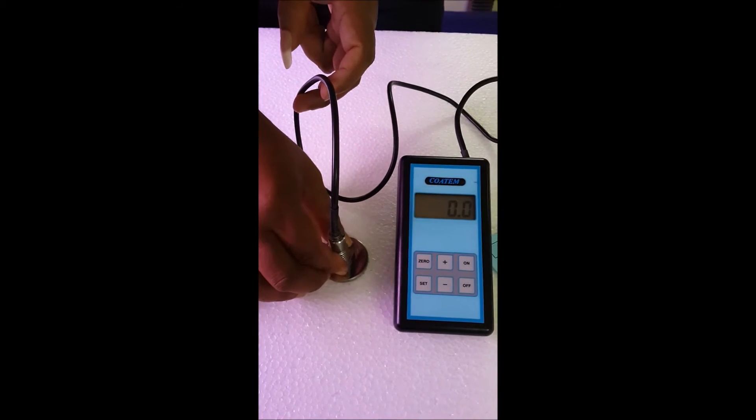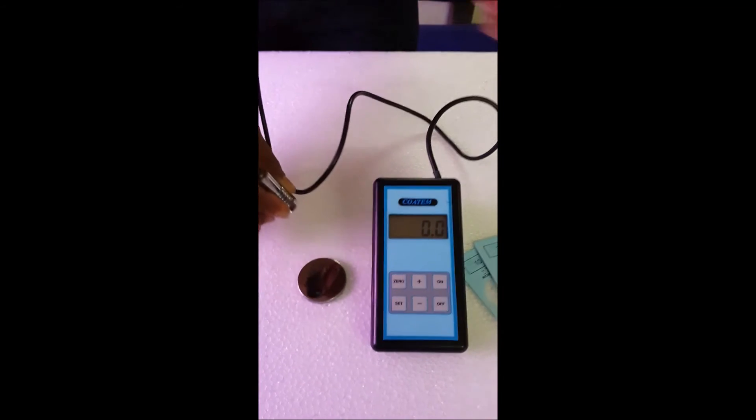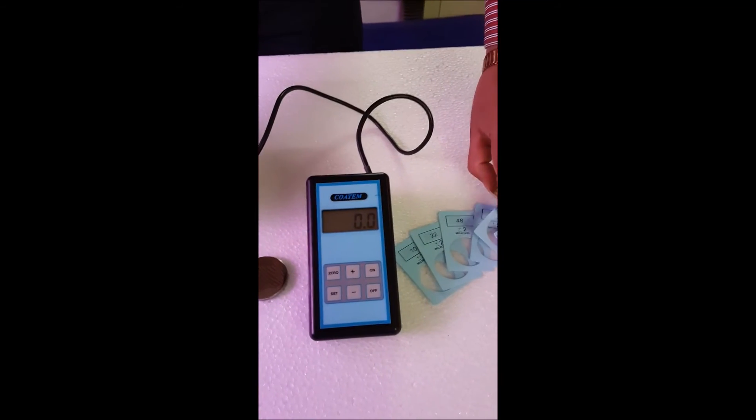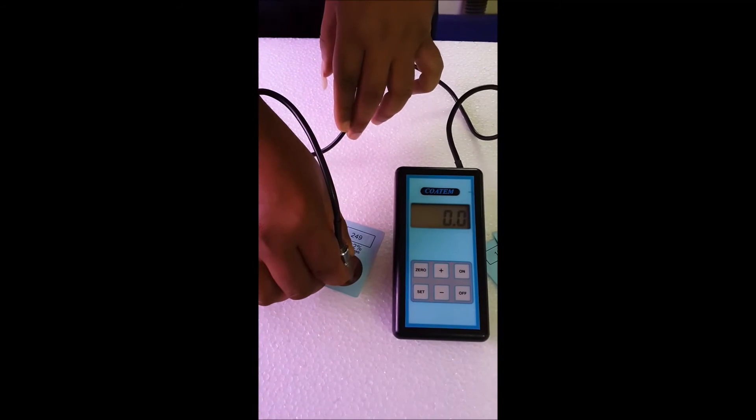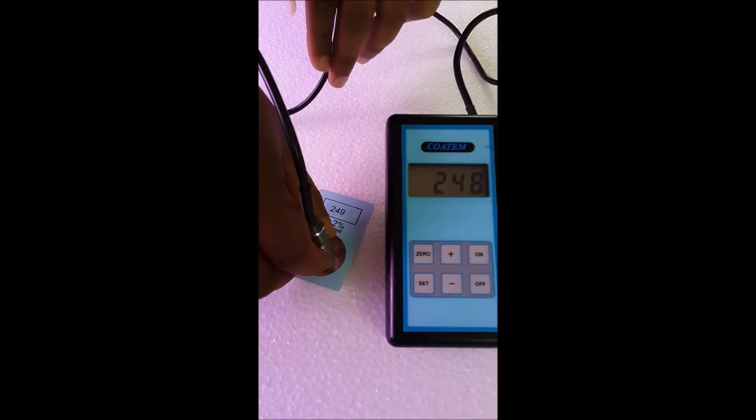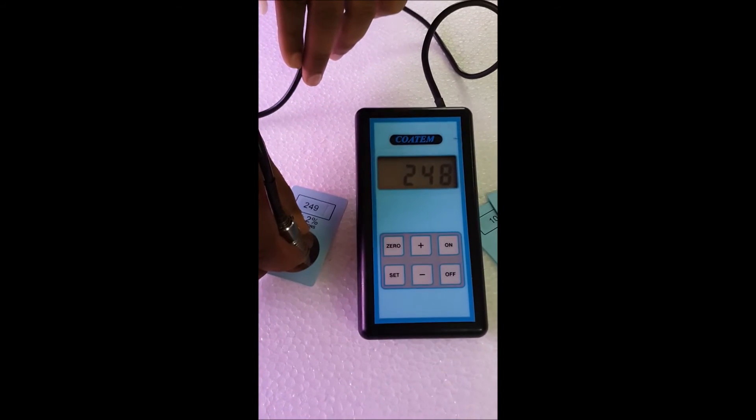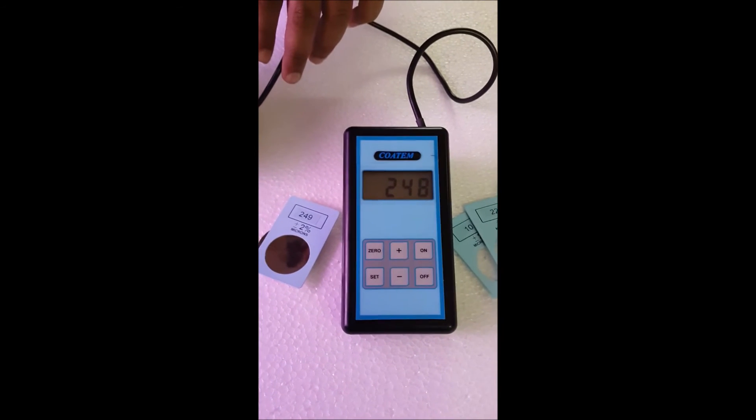Place the probe on the zero block and you get zero. That's fine. Now we take the calibration strip and check. 249. Okay, the instrument is working fine.